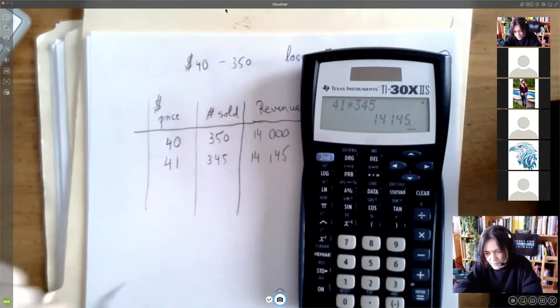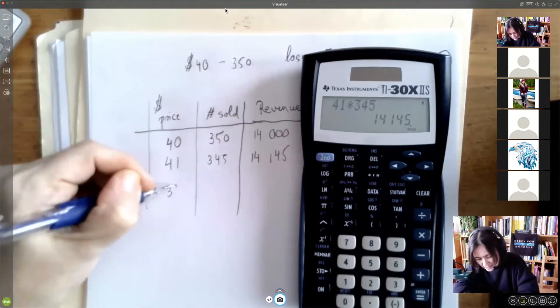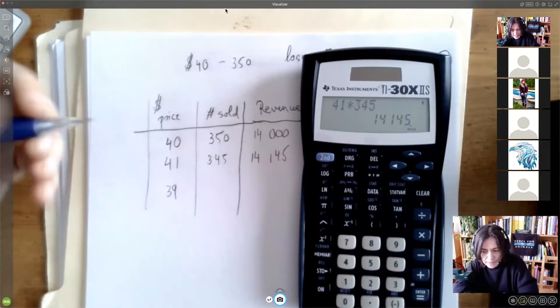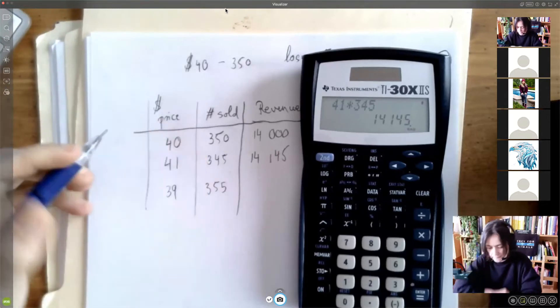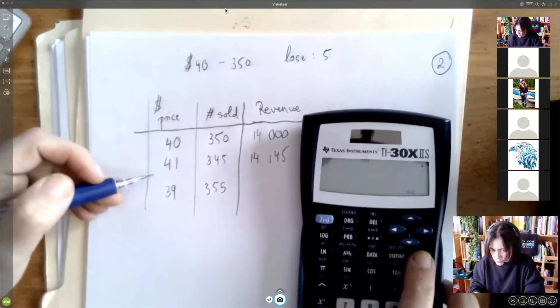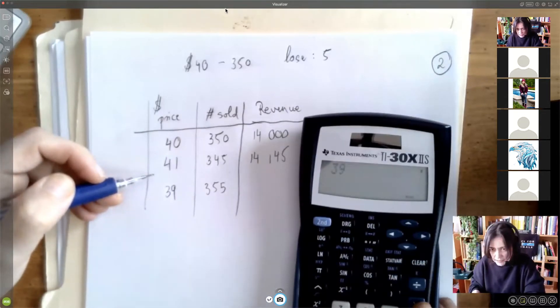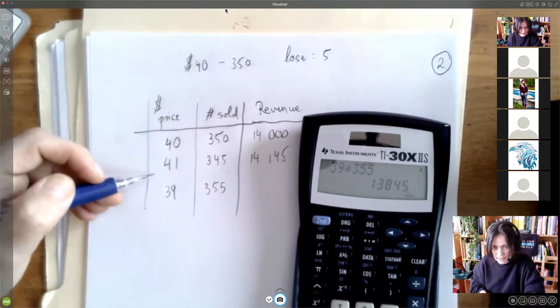And by the way, this is true backwards. So if we lower the price to 39, we should be gaining five customers. So that would be 355. If raising the price helps, probably lowering won't. 39 times 355, 13,945.